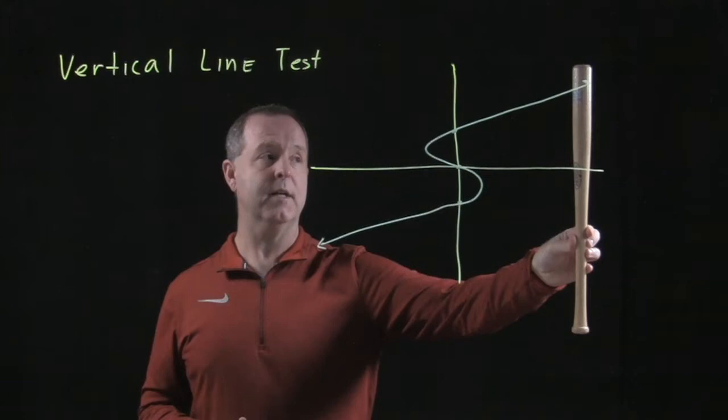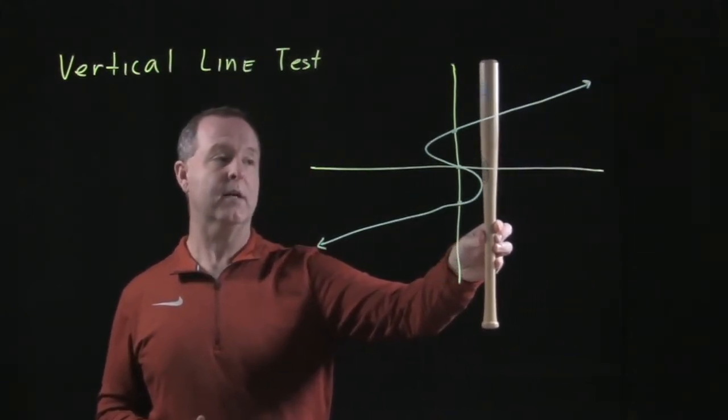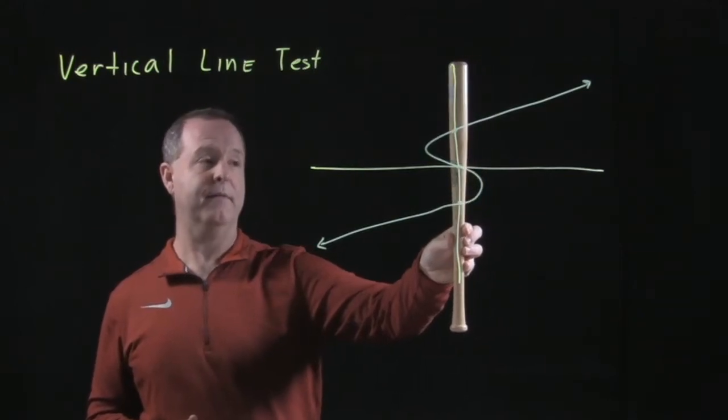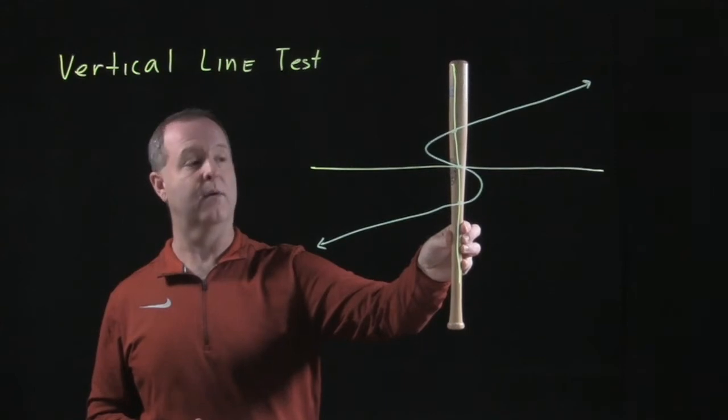it's a function as long as it only intercepts the vertical line in one space. What you notice is I start to get closer to here on this particular graph, and maybe I'll just stop it right there for a second, along the point of x equals zero.